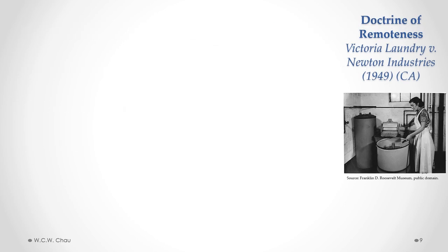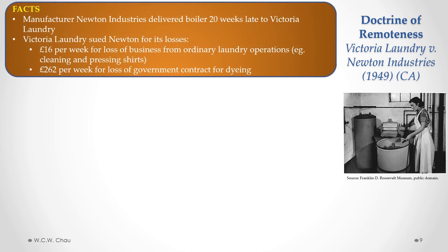The case which sets out the principles for the Doctrine of Remoteness is the English Court of Appeal case Victoria Laundry v Newton Industries. Newton Industries had a contract to deliver a new boiler to Victoria Laundry. However, Newton delivered that boiler 20 weeks late, and Victoria Laundry sued Newton for the losses it suffered caused by that 20-week delay.